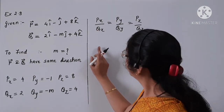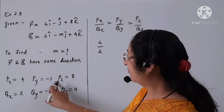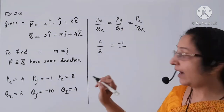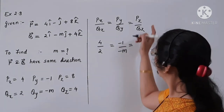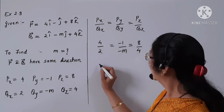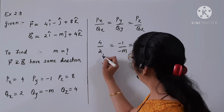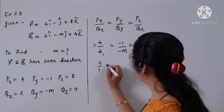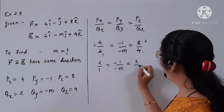Now, px is 4 upon qx is 2, py is minus 1 and qy is minus m, and pz is 8 and qz is 4. We can simplify: 4/2 gives 2/1, and 8/4 also gives 2/1. So the proportion becomes 2/1 equal to minus 1 upon minus m, which equals 2/1.